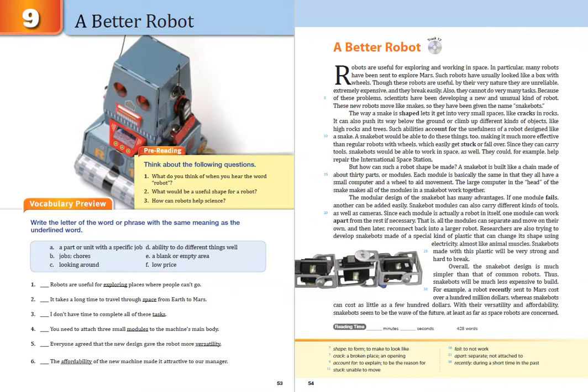A snakebot would be able to do these things, too, making it much more effective than regular robots with wheels, which easily get stuck or fall over. Since they can carry tools, snakebots would be able to work in space as well. They could, for example, help repair the International Space Station. But how can such a robot shape be made?